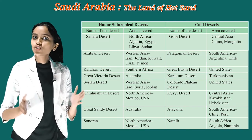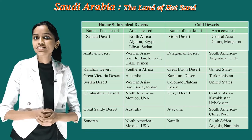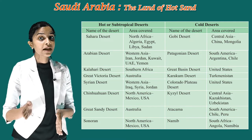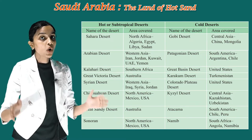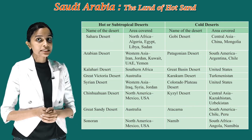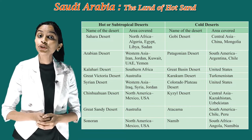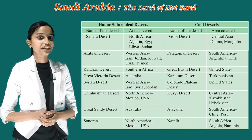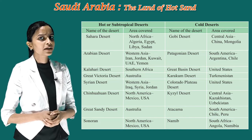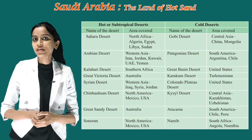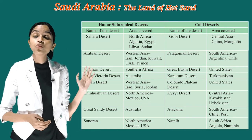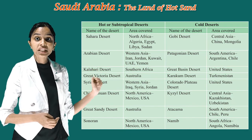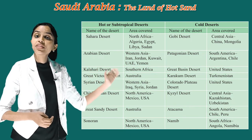Great Victoria Desert is in Australia. Syrian Desert is in Western Asia — Iraq, Syria, and Jordan. Chihuahuan Desert is in North America — Mexico and USA. Great Sandy Desert is in Australia. Sonoran Desert is in North America — Mexico and USA.